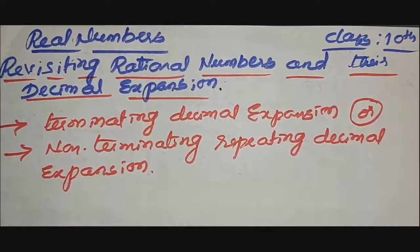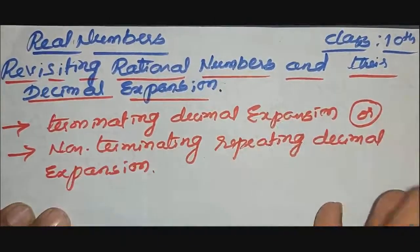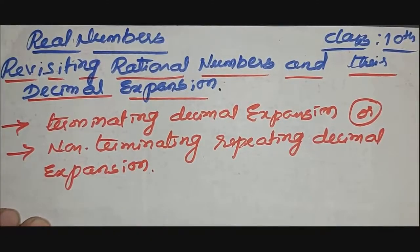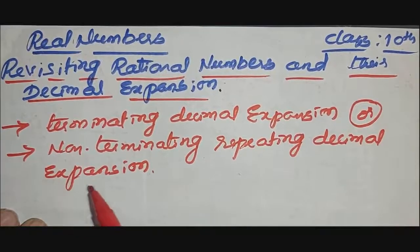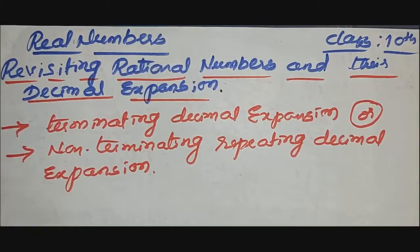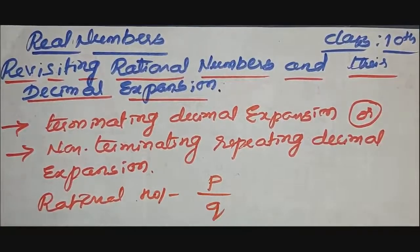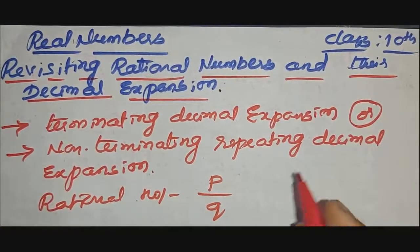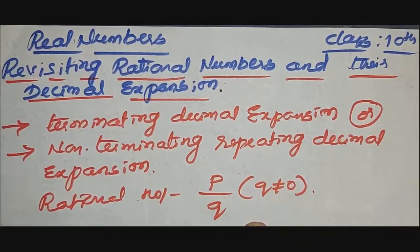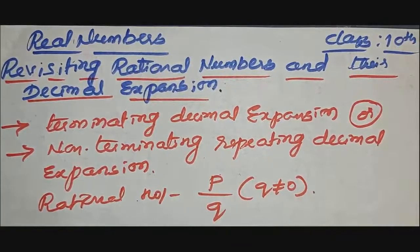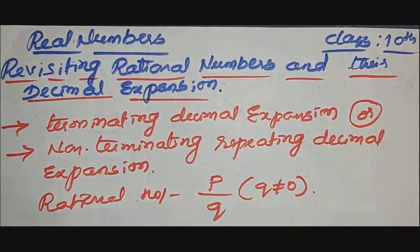Today in this class you are going to learn about revisiting rational numbers and their decimal expansion. This is Class 10 standard, lesson on real numbers. In Class 9 you studied that rational numbers have either a terminating decimal expansion or a non-terminating repeating decimal expansion. In this section we are going to consider a rational number p by q, where q is not equal to 0, and explore exactly when the decimal expansion of p by q is terminating and when it is non-terminating repeating or recurring.